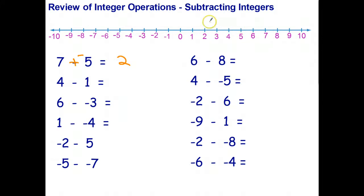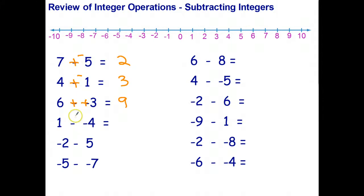As a check: I start at seven on the number line, I'm adding negative five so I go back five and end up at two — the same answer as when we subtracted. Similarly, four subtract one is three; if I change it to add the negative, I start at four, go back one and end up at three. Subtracting a negative number is like taking a bill away, so you're actually better off. Subtracting negative three is the same as six plus three, which is nine. For every question: change subtraction to plus and change the sign of the second number.